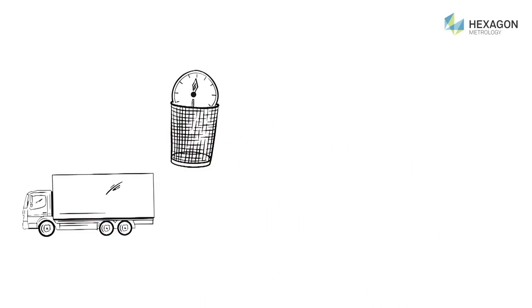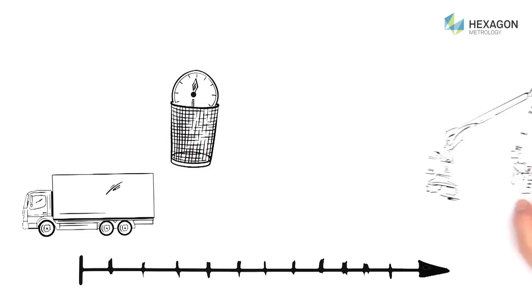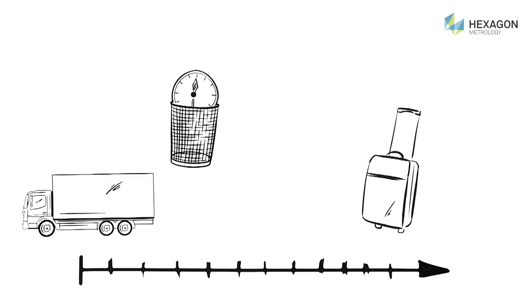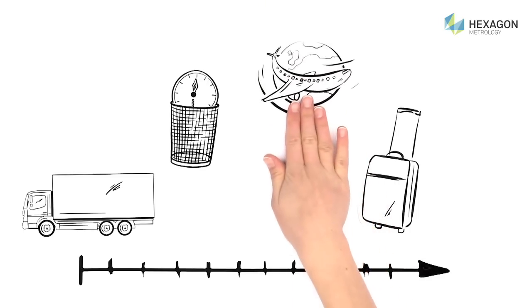Now this is a thing of the past, thanks to the Romer Absolute Arm by Hexagon Metrology. A totally portable 3D laser scanner arm. It is easy to move, which means that from now on, Peter will be able to measure components wherever they are.